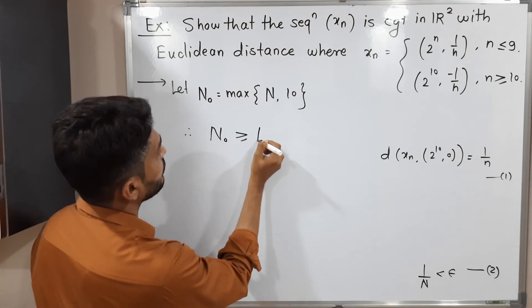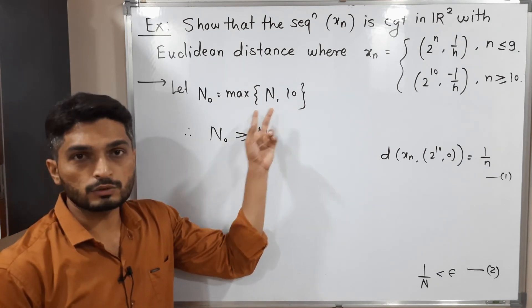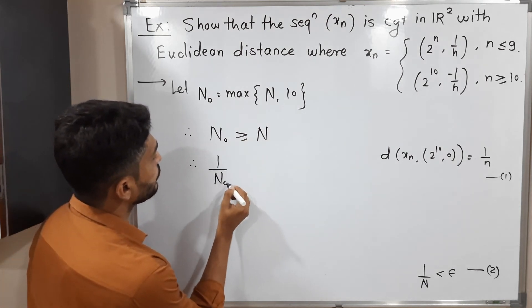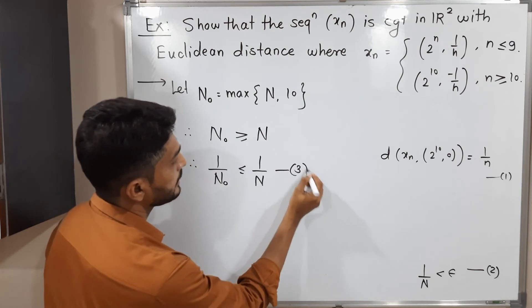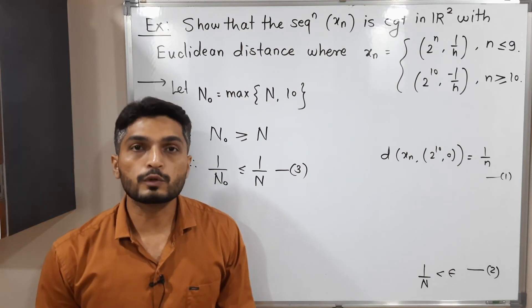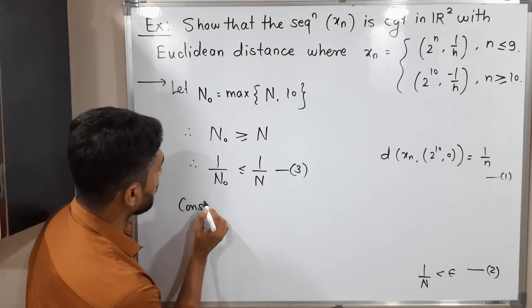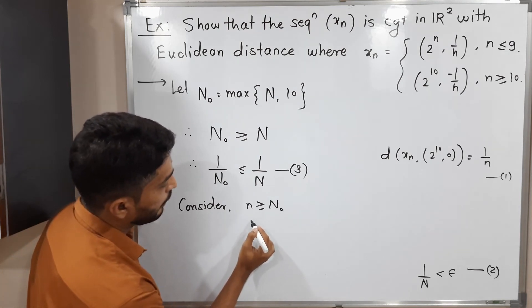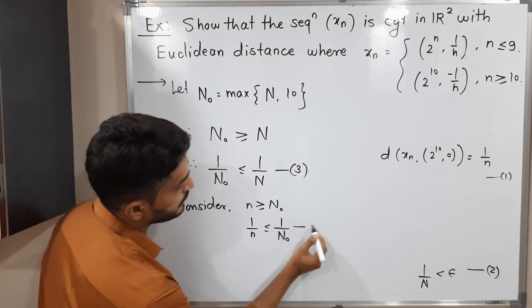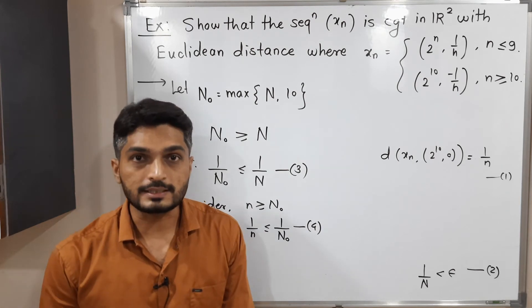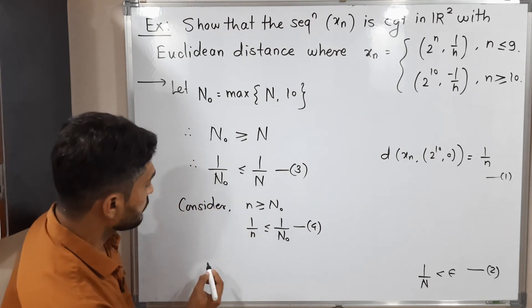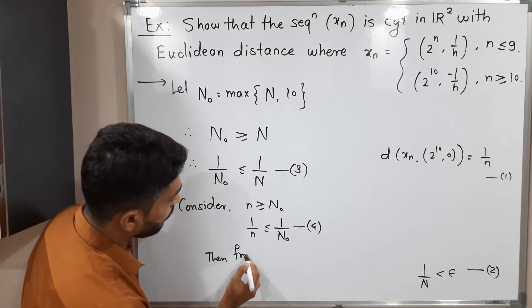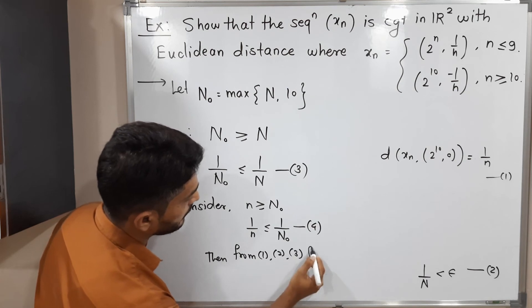Since N0 is greater than or equal to N, taking reciprocals reverses the inequality: 1 by N0 is less than or equal to 1 by N. Call this inequality 3. Now considering n greater than or equal to N0, taking reciprocals gives 1 by n less than or equal to 1 by N0. Call this inequality 4.